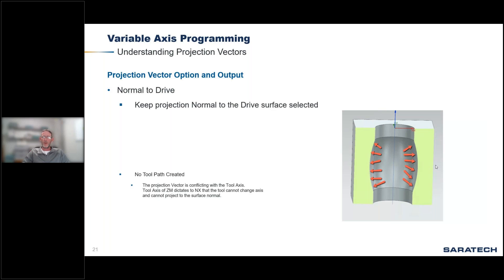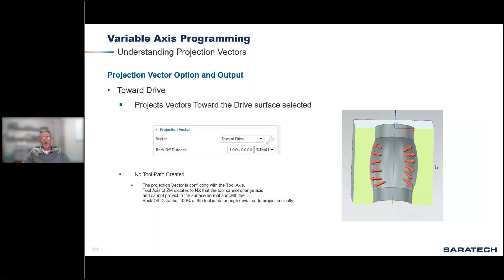Normal to drive looks at the surface, the tool, and your tool axis vector, and asks: if I tilt this tool to be normal to that surface, does my tool axis give me that capability? If it does not, it won't give you toolpath. If you create a three-axis toolpath and tell it to be normal to drive for its projection, it's not necessarily going to work — you have to make sure you allow it to both move freely and see the surface. Toward drive is the same, except it uses the back-off distance to project those vectors.